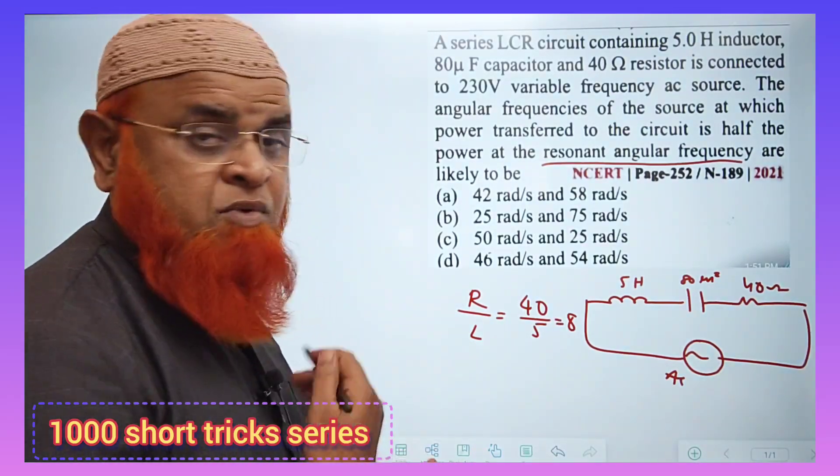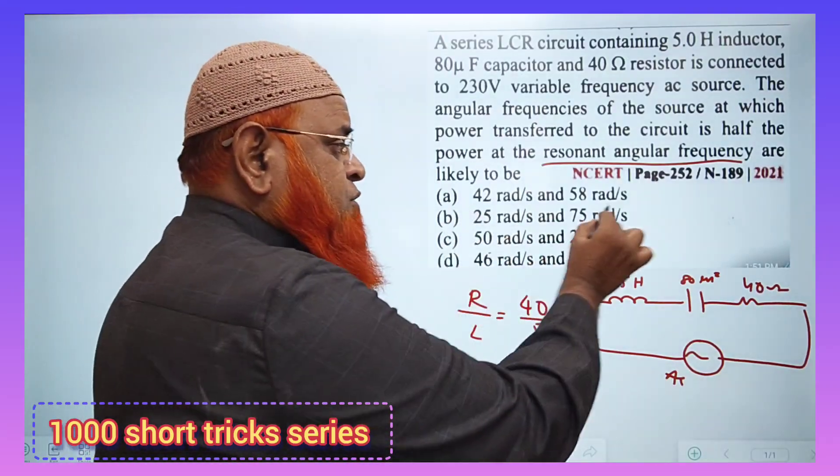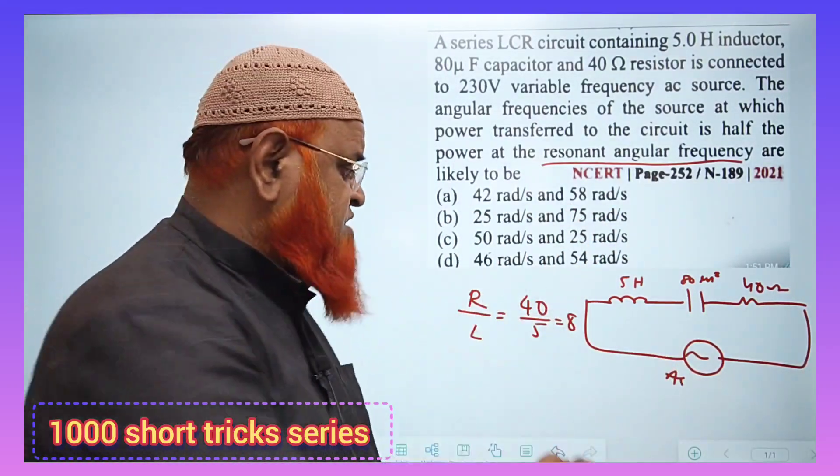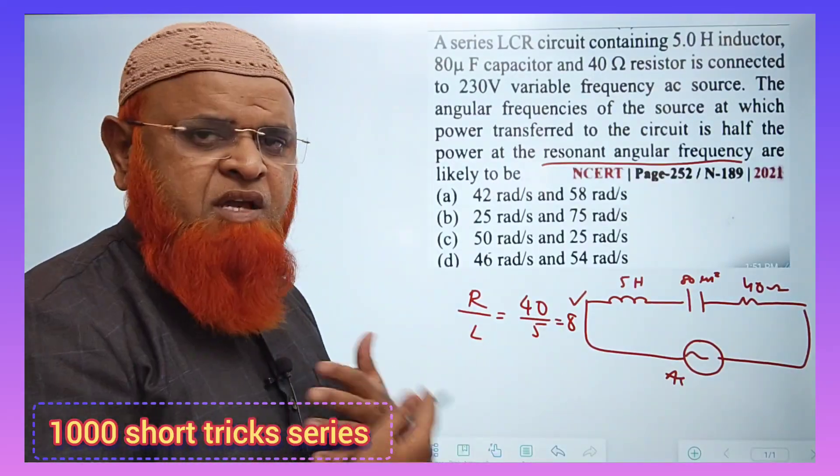Then your answer is ready. Your answer is ready. Yeah. Now let's see how you can select the correct option. Find out the two values whose difference is going to be 8 here. Whose difference is going to be 8? That's it, your answer is ready.